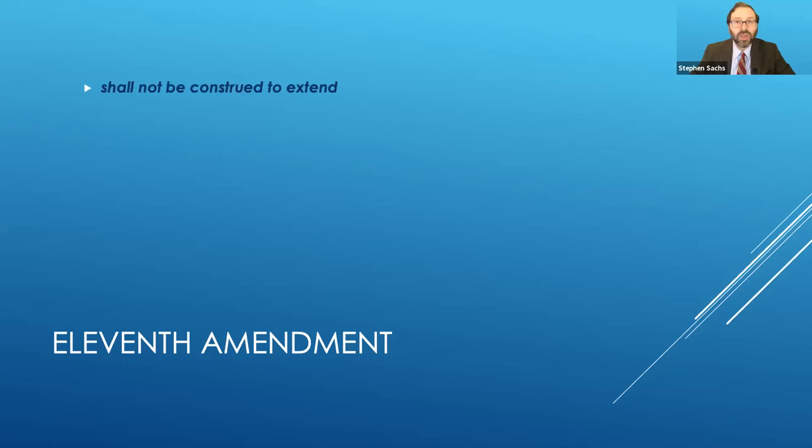So our argument is all that stuff is wrong. The 11th Amendment is not waivable in a case that falls within its terms. Shall not be construed to extend. What exactly shall not be construed to extend to various things? The answer is the judicial power. So we say this is a cross-cutting limit. It affects all of Article III. The more common theory in the academy, which is known as the diversity theory, reads the amendment much more narrowly. It says that only applies to state diversity jurisdiction.